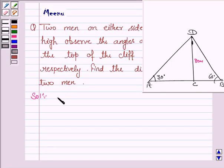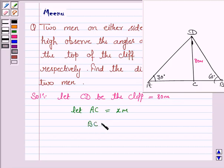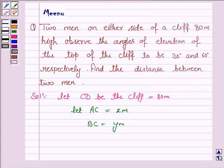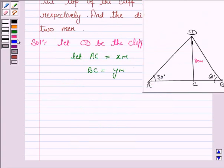Suppose let CD be the cliff, this is 80 meter high, and distance of first man from the cliff be x meter. Let AC be x meter and distance of the second man from the cliff is y meter, that is BC is y meter.